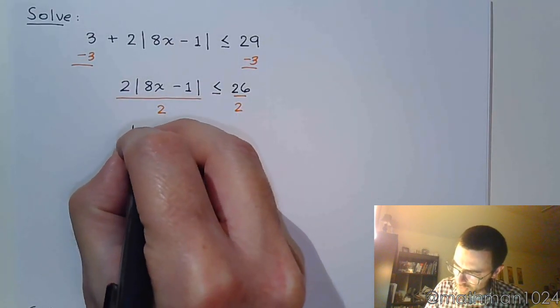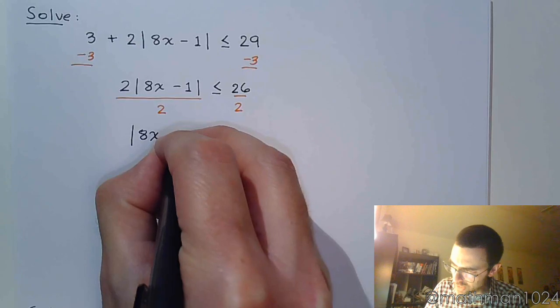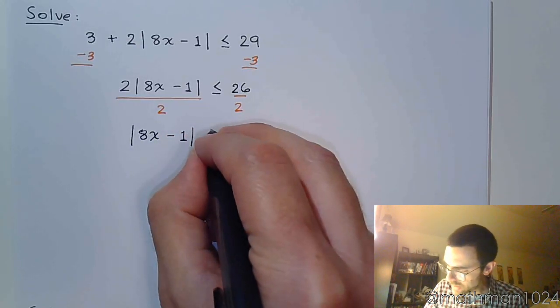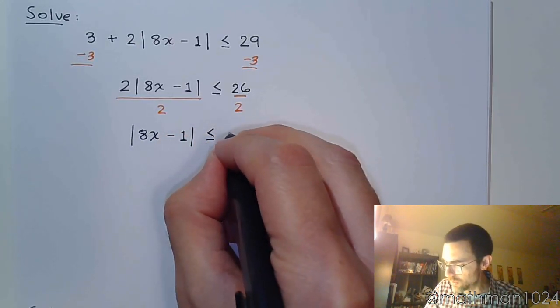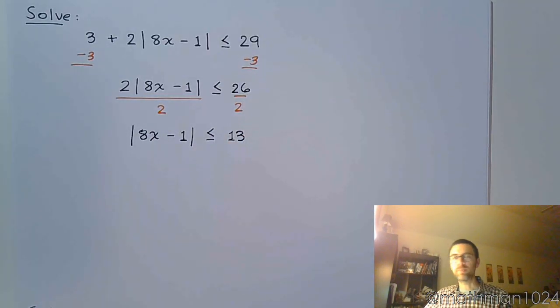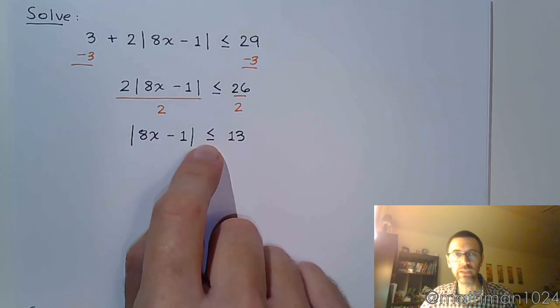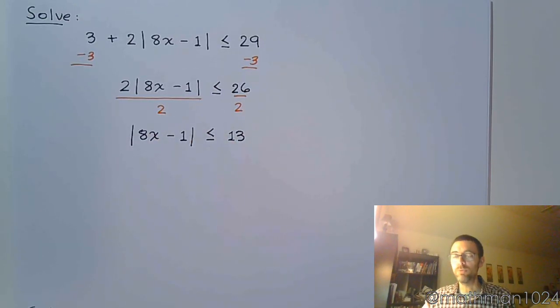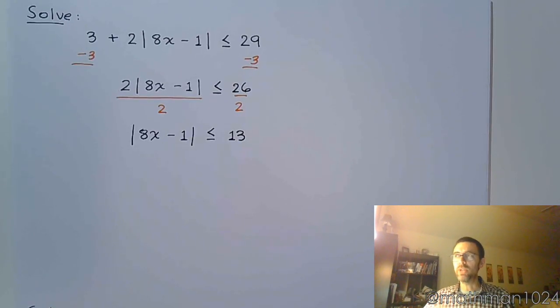We get that the absolute value of 8x minus 1 is less than or equal to 13. The absolute value is by itself. So is this a restriction where things are bounded, stay close by, or does it push people away? Well, I want your distance to be less than, so I'm trying to restrict your movement, restrict the distance, which means stay close by. You have one section of the number line that we're talking about, which means you can have just one string of inequalities.